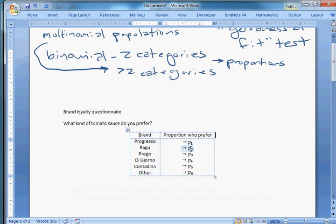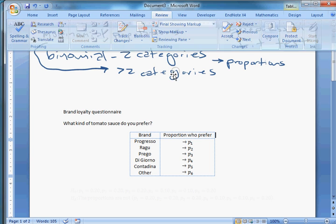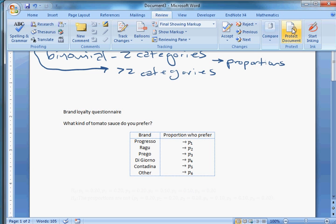Let's say that we've done some previous research, and I'm totally making this up. Let's say that we think that Progresso, Ragu, and Prego are both twice as popular as Di Giorno or Contadina, and about 20% of people prefer some other brand. That means p6 is gonna be 0.2.